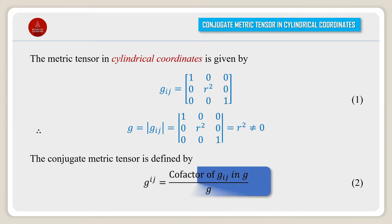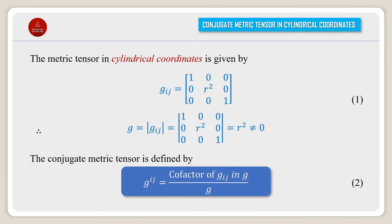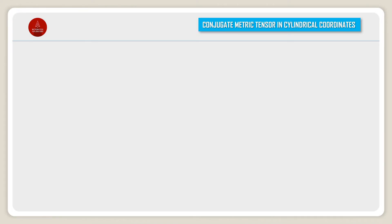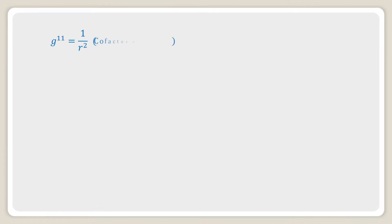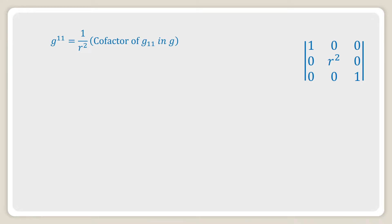The conjugate metric tensor is defined by g^ij equal to the cofactor of g_ij in g divided by g. Therefore g^11 is equal to one over r² multiplied by the cofactor of g_11, which is the determinant of r², 0; 0, 1. After simplification we get r² over r², which is equal to 1.